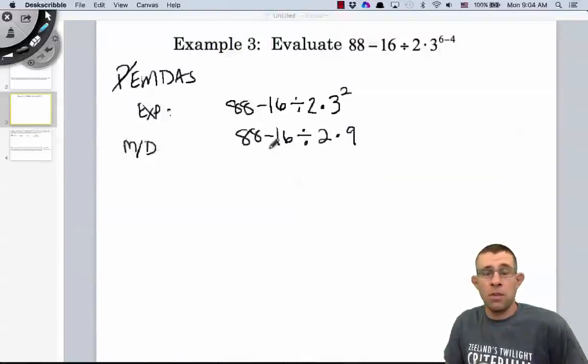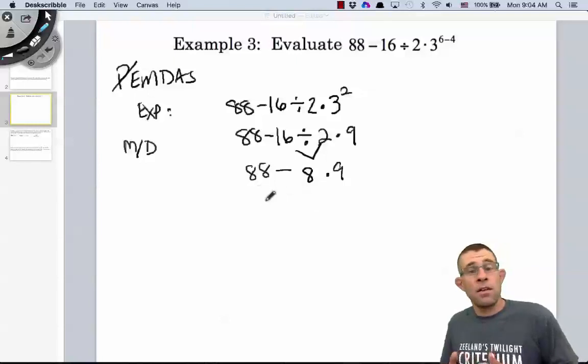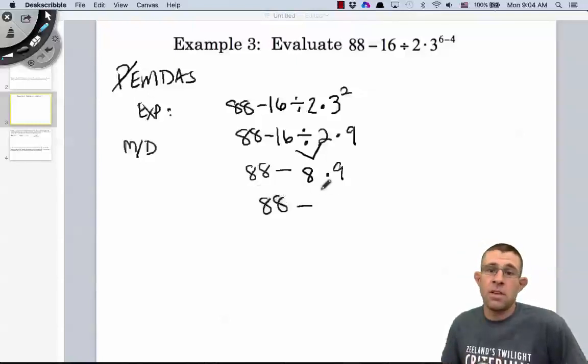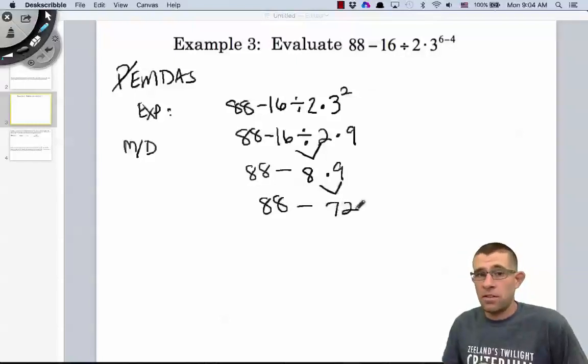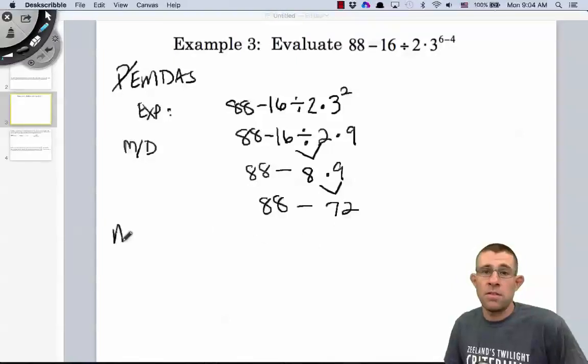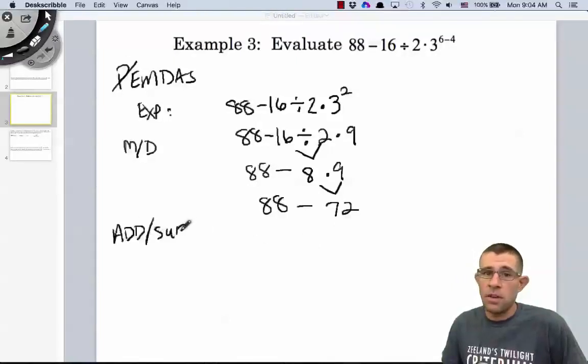Now we can handle our multiplication and division, 88 minus 16 divided by 2, which is 8 times 9. Now we can handle our multiplication, 8 times 9 is 72. So we have 88 minus 72. And then finally, we're able to handle our addition and subtraction, which is 88 minus 72. And that results in 16.